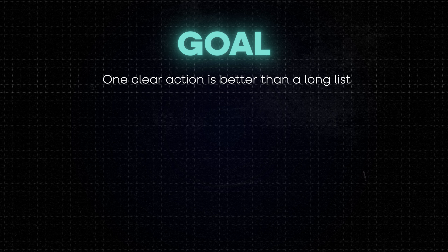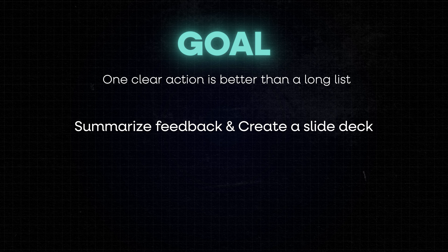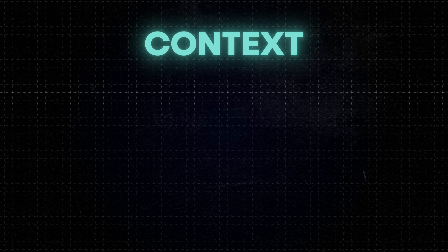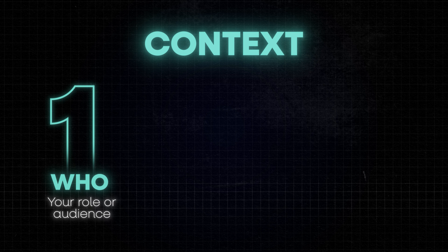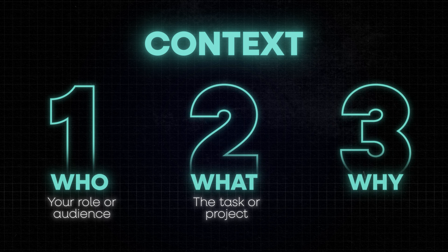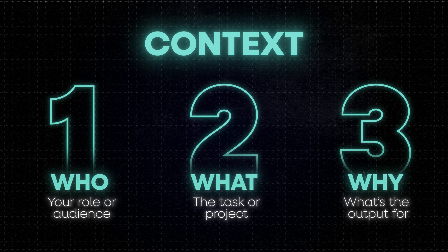If you need multiple things — like summarizing feedback and creating a slide deck from it — you can split the actions into separate prompts. Otherwise, Copilot will try to do too much at once and fail at both tasks. For context, include the who (your role or audience), the what (the task or project), and the why (what the output is for). That's typically enough for Copilot to tailor the tone, content, and priorities without getting overwhelmed.